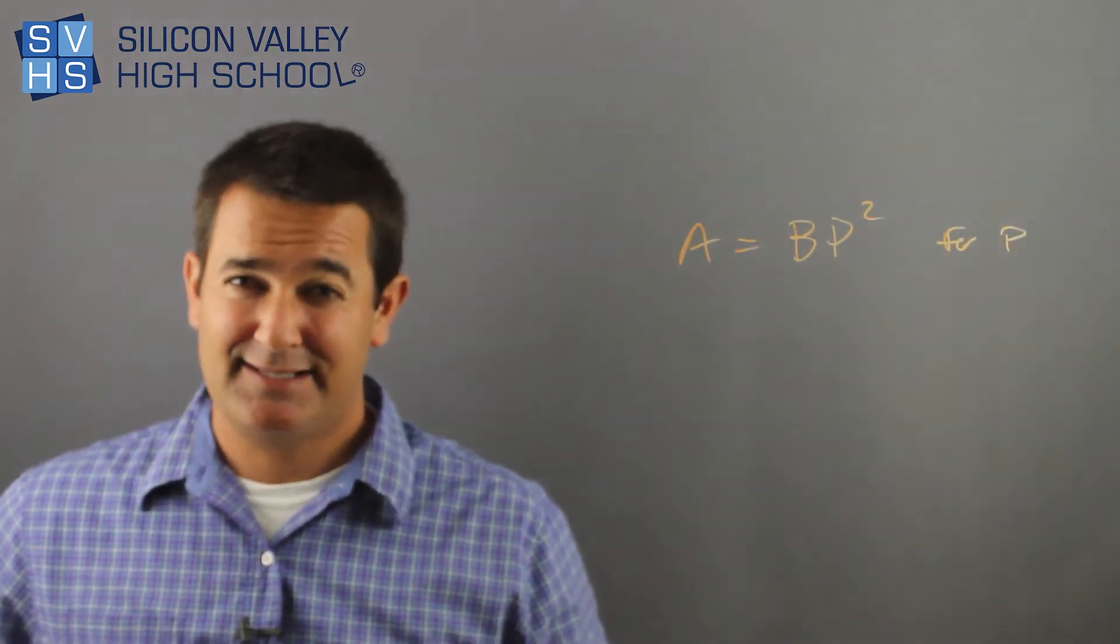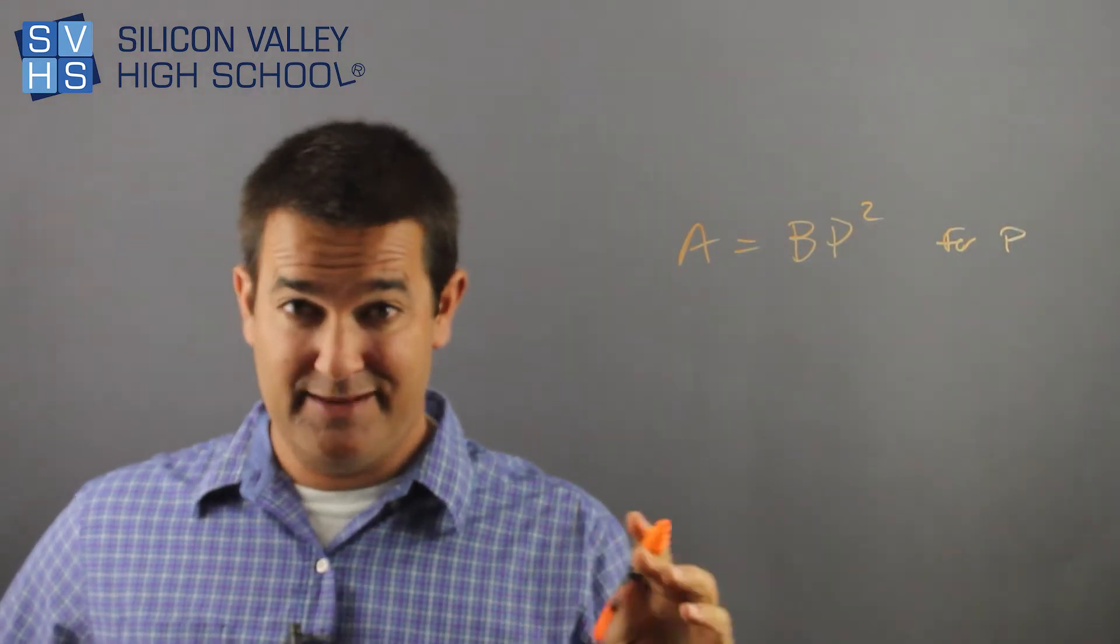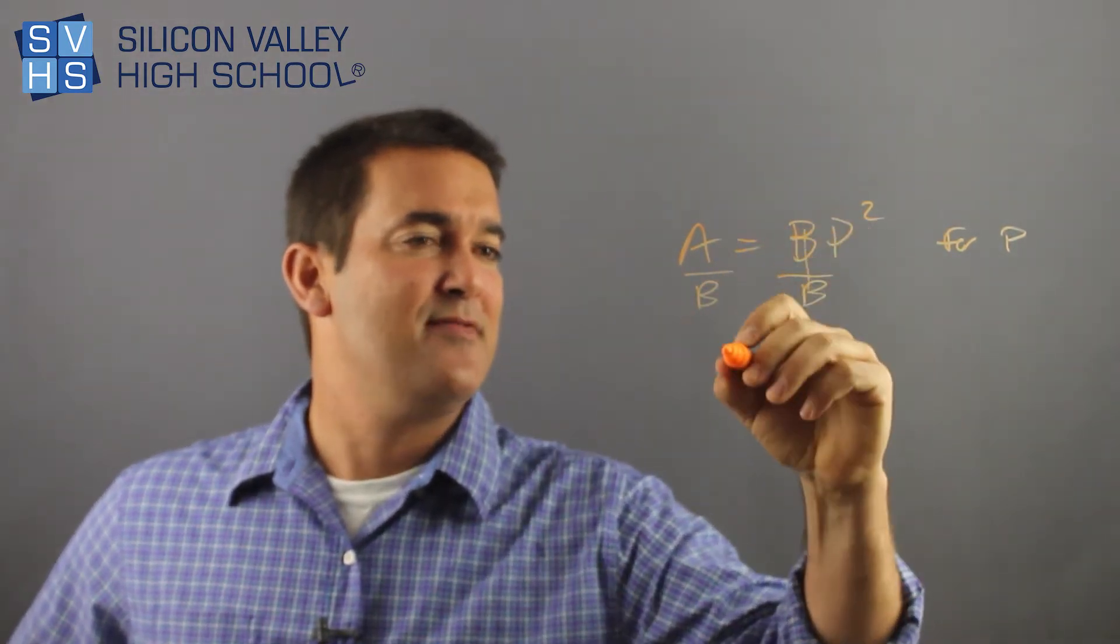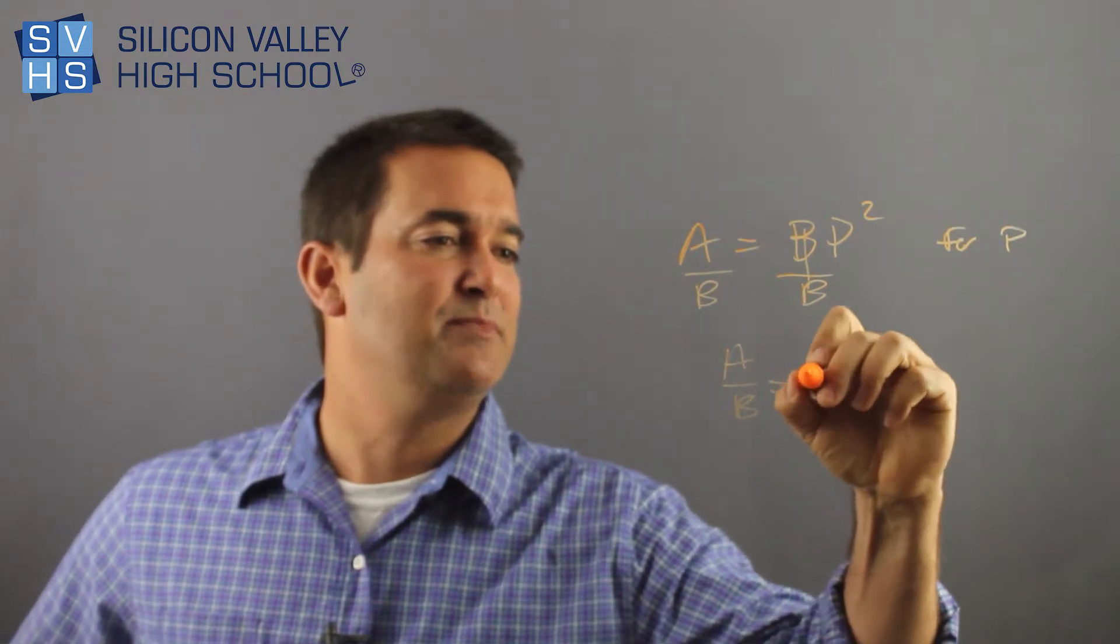And they say solve for P, right? And this is less straightforward. I know B. That's easy. I'm going to get rid of B. Let's divide that sucker out of there. Divide both sides by B. And then I have A over B equals P squared.